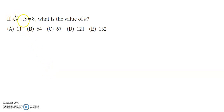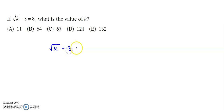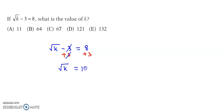If root of k minus 3 is equal to 8, what is the value of k? We have been given root of k minus 3 is equal to 8. Now we add 3 on both sides, so adding 3 on both sides, this 3 gets cancelled off, and we have root of k is equal to 8 plus 3, that's 11.